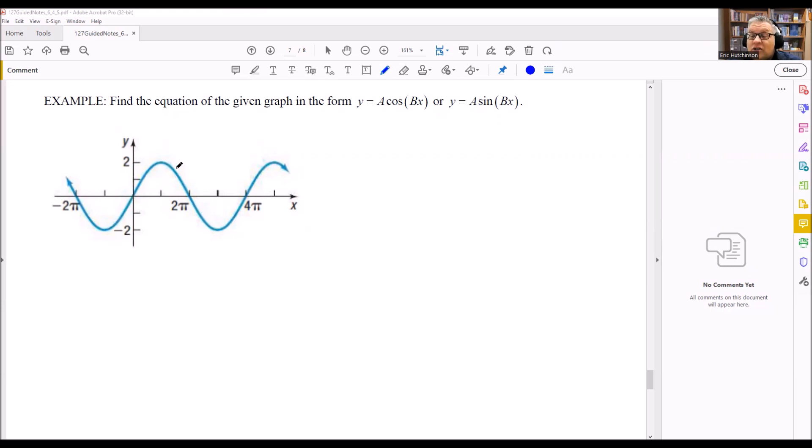So we're going to look at what the period is. The period is how long it takes for the cycle to repeat. So for this, it goes up, it goes down, and it ends here, and the cycle starts over again. So one cycle is going to be between 0 and 4π. So now I know that the period is going to be equal to 4π.